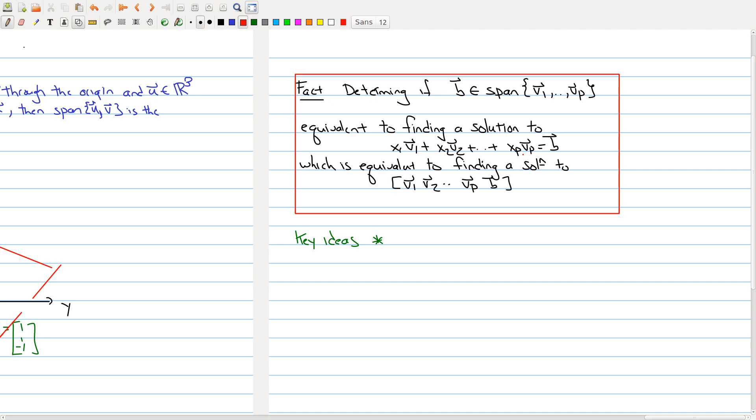We saw earlier in today's lecture that this is actually equivalent to finding a solution to this particular matrix in augmented form, where the vectors vi form the columns and the bi's correspond to what you want it to be equal to.